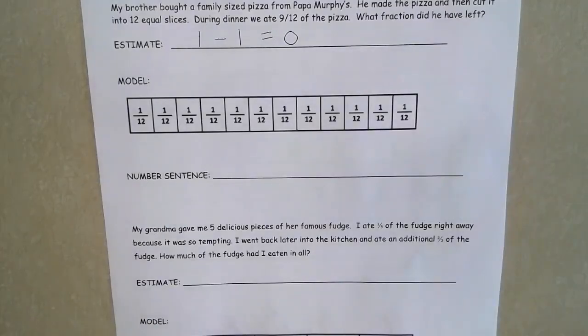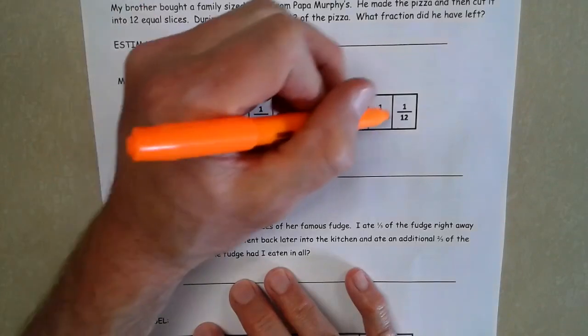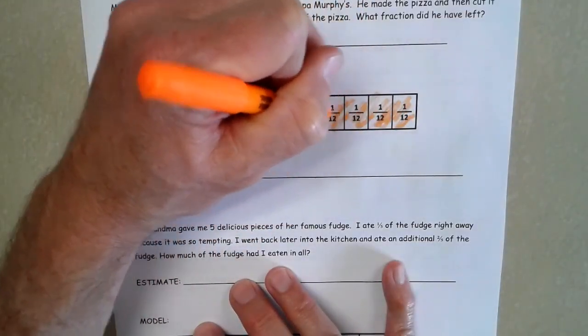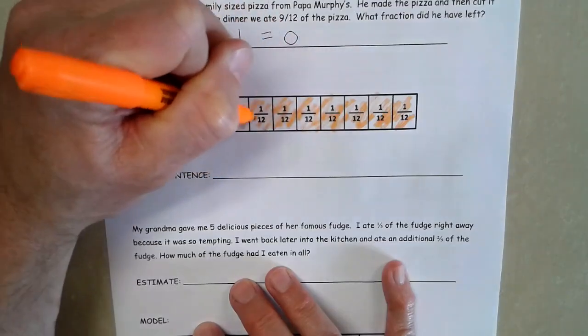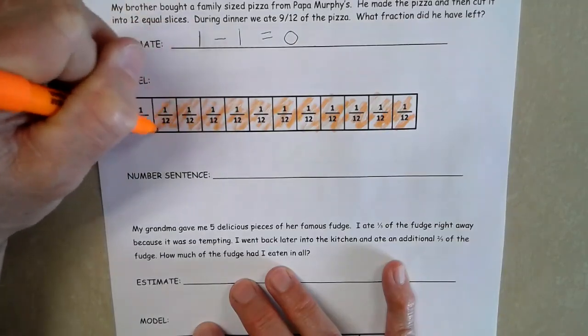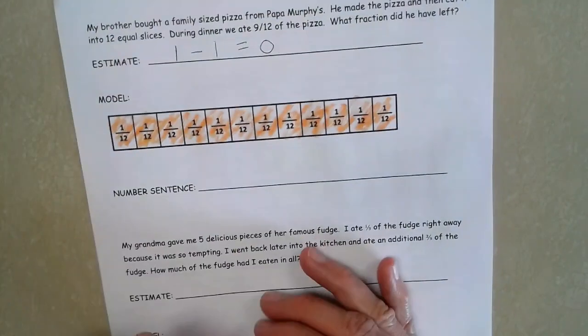So we're going to make a model here. So we're going to be doing some subtracting again, it looks like. And we're starting with all 12 pieces of pizza, large family-sized pizza, it said. And at dinner we ate nine twelfths of that.